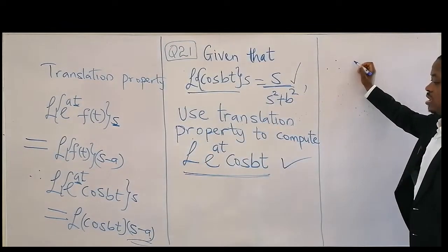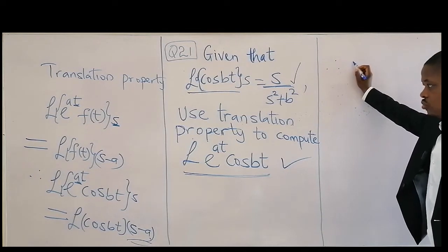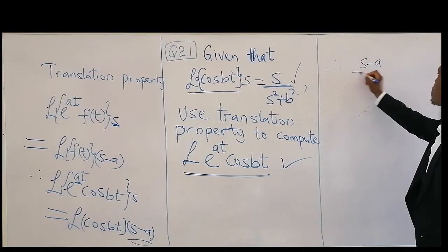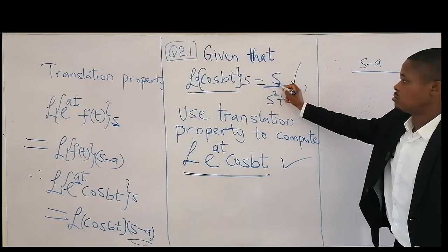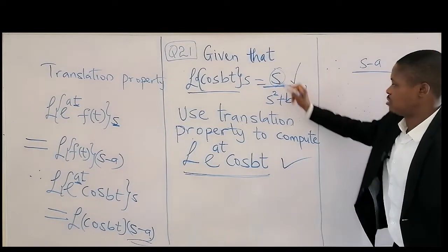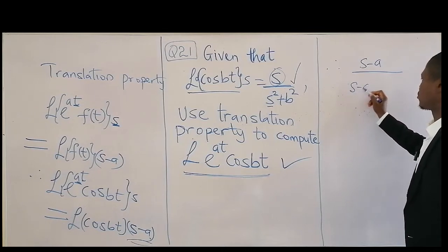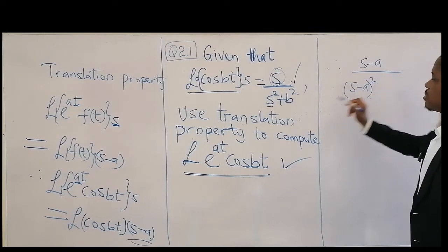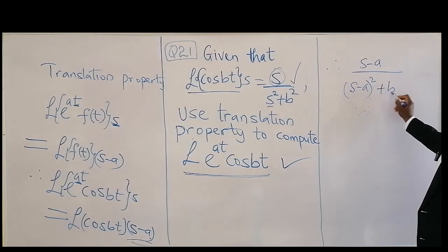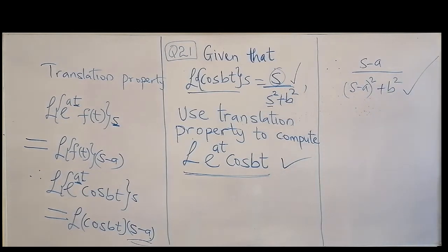That will be the final conclusion: s minus a. Replace this with s minus a, then this one also will be (s minus a) squared, then plus b squared. And that's that on translation properties.